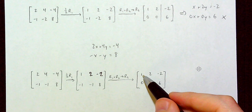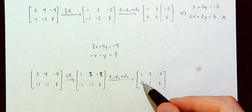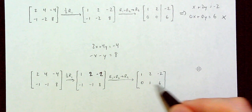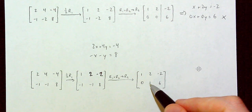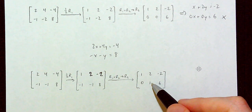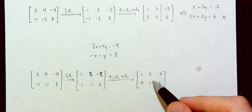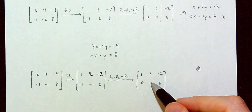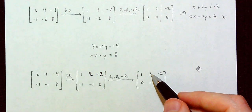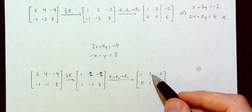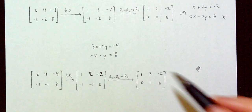Note that we have the leading 1 in row 1 with a 0 below it — that's good. Looking at row 2, we have 0 and then a leading 1 — that's good. But this is still not in row-reduced echelon form because the other entry in the column with this leading 1 is not yet a 0.